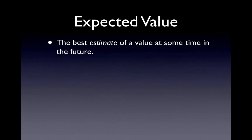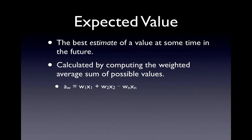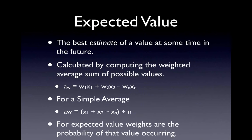So what is expected value? In plain language, the expected value is the best estimate of a value at some point in the future. The estimate is calculated by computing the weighted average sum of a set of possible values. Ideally we'd like to use all possible values, but that's not always possible. The weighted average is calculated using a formula where each value x is multiplied by a weight w. For expected value, the weight for each value is the probability of that value occurring.